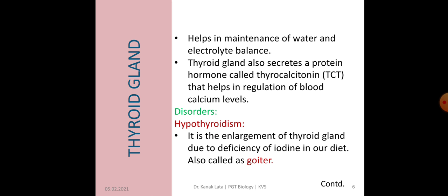Besides these two hormones, Thyroid gland also secretes a protein hormone called thyrocalcitonin (TCT), that helps in regulation of blood calcium level in our body.